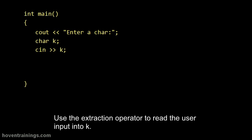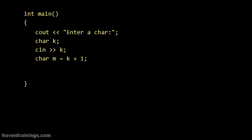Use the extraction operator to read the user input into K. Char is internally stored as a number. To obtain the next ASCII number, add 1 to K. Now M contains the next character.